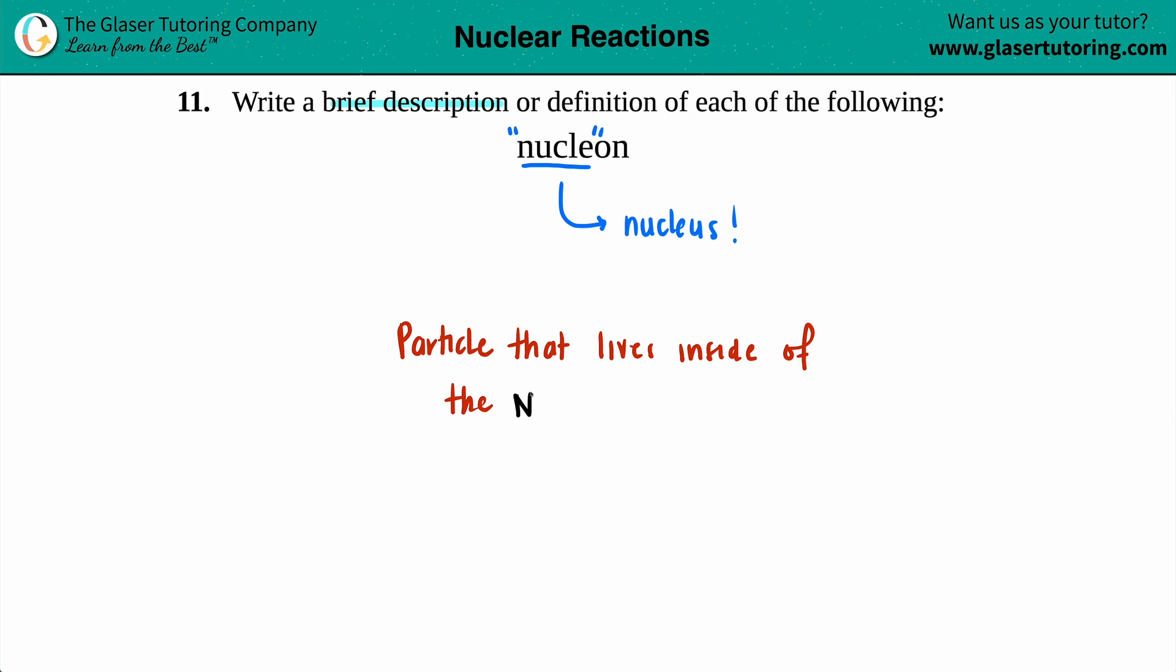So now we gotta think of all the particles that just exist inside the nucleus. And for chemistry, we just have to think of two of them. What are the two particles that exist and live inside of the nucleus?